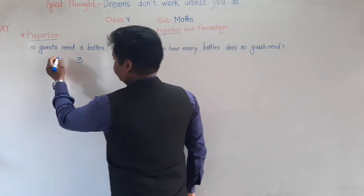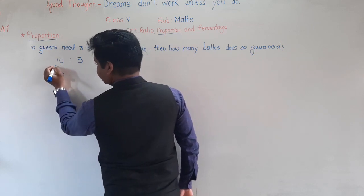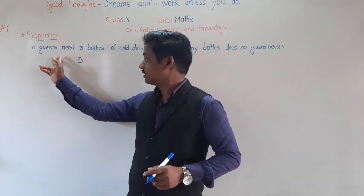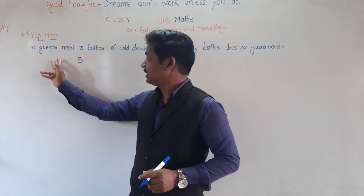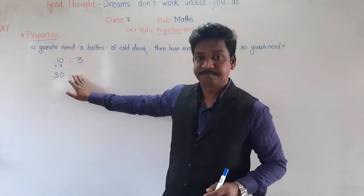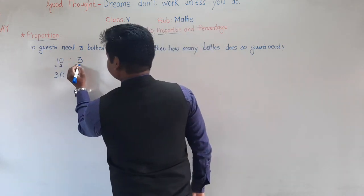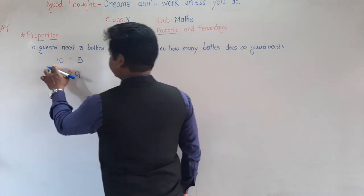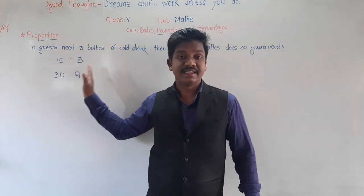See now, 10 and 30 — how is 30 obtained? By multiplying 10 by 3. So 10 is also guests and 30 is also guests. 10 guests require 3 bottles, then 30 guests require how many bottles? 30 means 10 multiplied by 3, so similarly 3 multiplied by 3 gives 9. So if 10 guests require 3 bottles, then 30 guests require 9 bottles of cold drink.